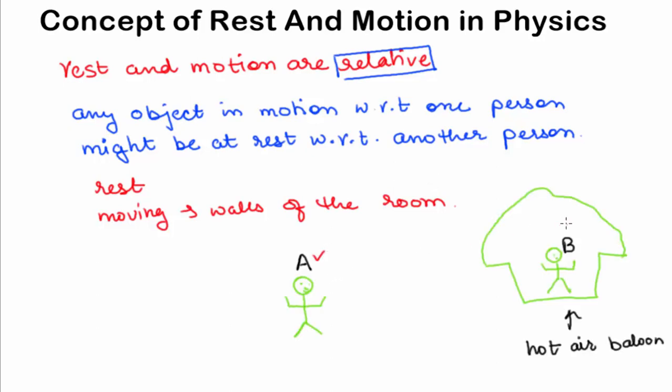Now for a person A who is observing another person B in hot air balloon from the ground, the person B is in motion with respect to him or ground. Now the same person B is at rest with respect to the hot air balloon or another person say person C sitting beside him in hot air balloon. This is because both of them are sitting inside the balloon and both are not moving with respect to each other as time passes.